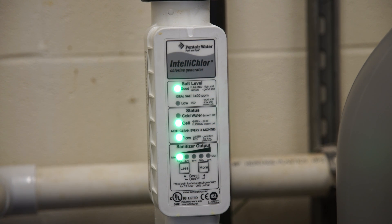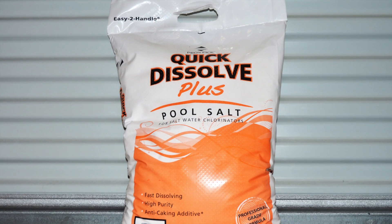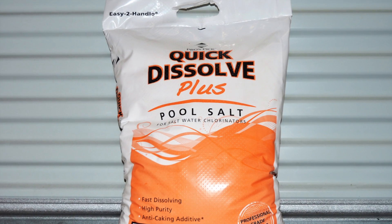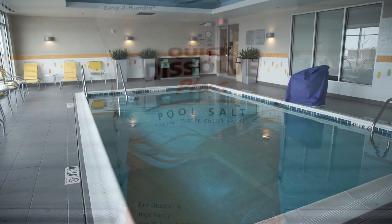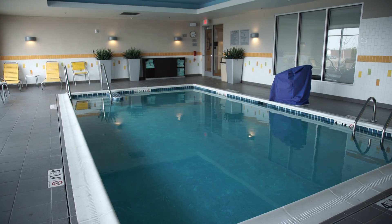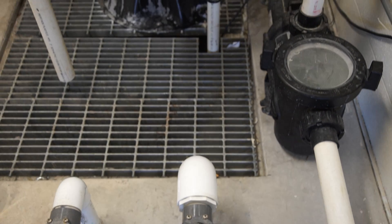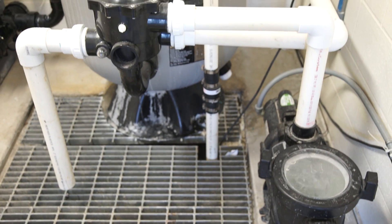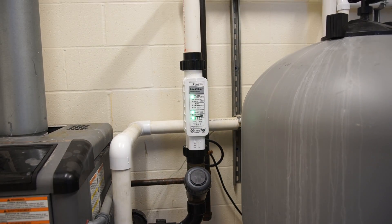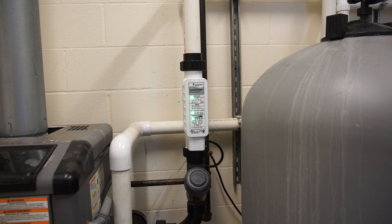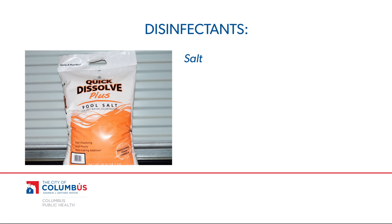Another form of chlorine is generated from salt. Salt chlorine generation is a method of manually adding salt to the swimming pool or utilizing a brine tank. The most predominant form comes after salt is manually added to the pool, enters the circulation system, and passes through an electrolytic cell which produces chlorine from the chloride ion in salt.